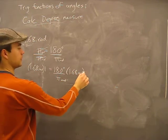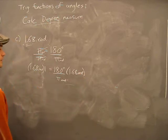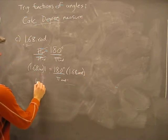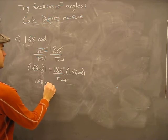The radians in the numerator cancel the radians in the denominator. What we're left on this side is 1.68 radians.